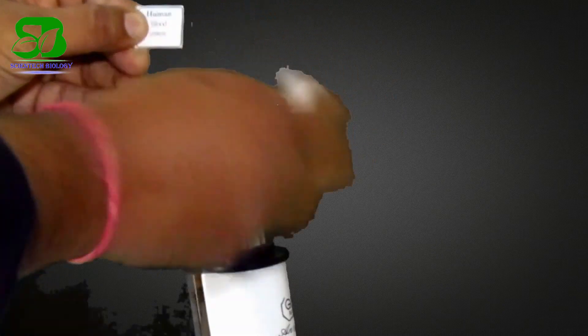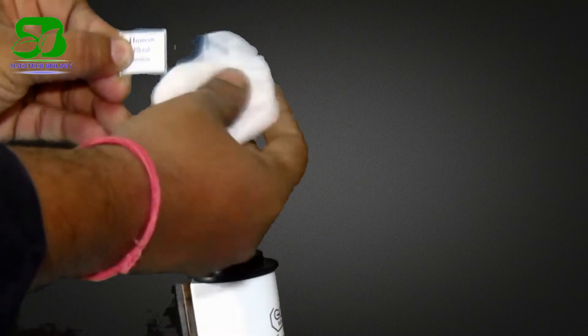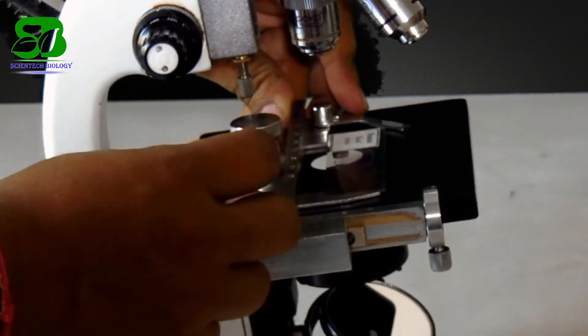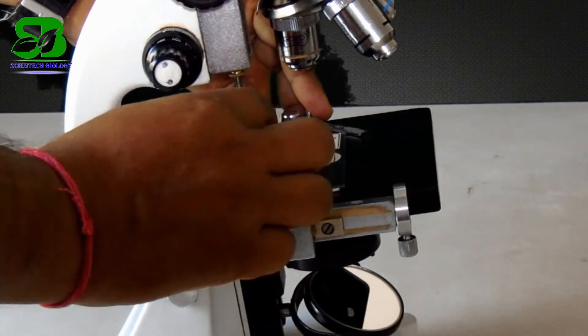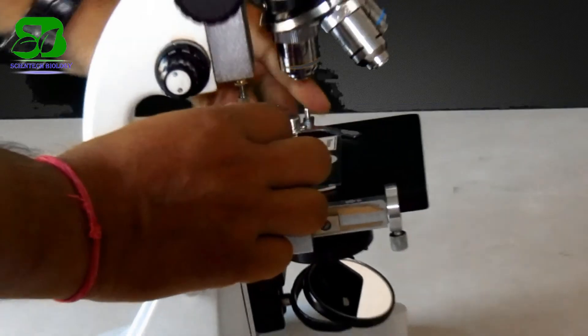Now clean the slide and place it on the stage. Look through the eyepiece and bring the object into the field of the microscope by rotating the mechanical clamp left and right and up and down.